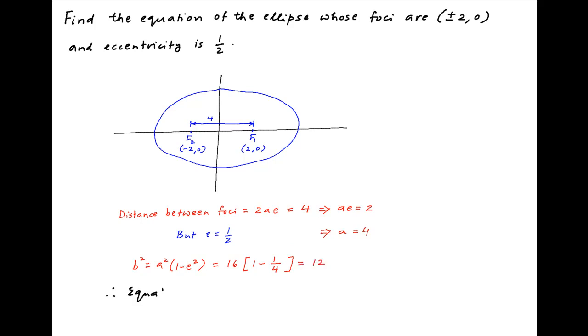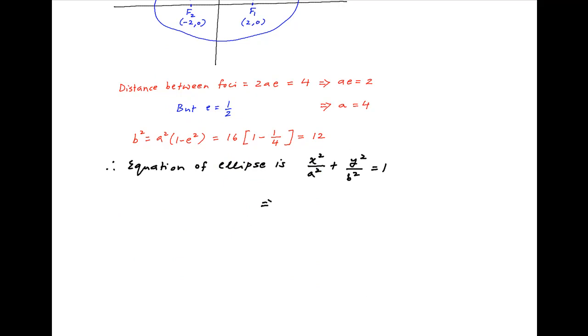Now the equation of the ellipse with semi-major axis A and semi-minor axis B is given by x²/A² + y²/B² = 1. Substituting the values of A and B obtained above, the equation of the ellipse is x²/16 + y²/12 = 1, which is the required answer.